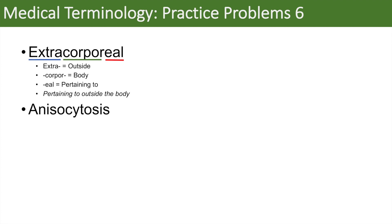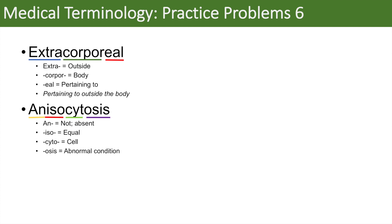The next word is anisocytosis. Breaking it down: the prefix an means not or absent, iso means equal — you might have heard of isotonic or isosceles triangles, all relating to equal. Cyto means cell, and osis means abnormal condition. So when we add it all together, anisocytosis means an abnormal condition of unequally shaped cells.